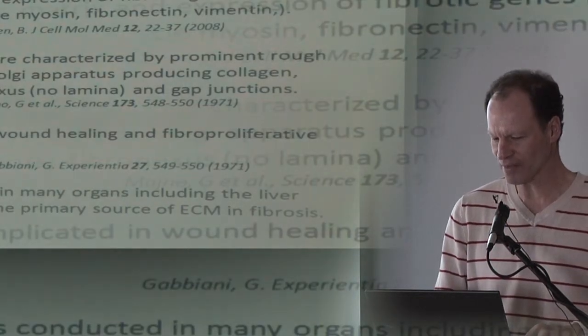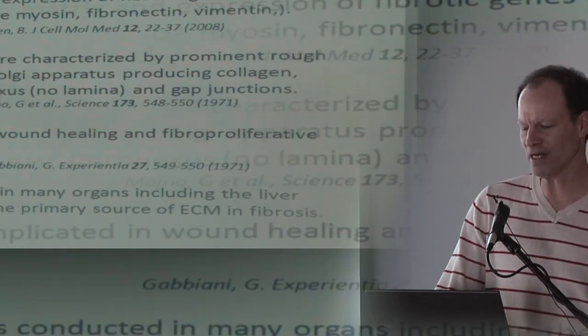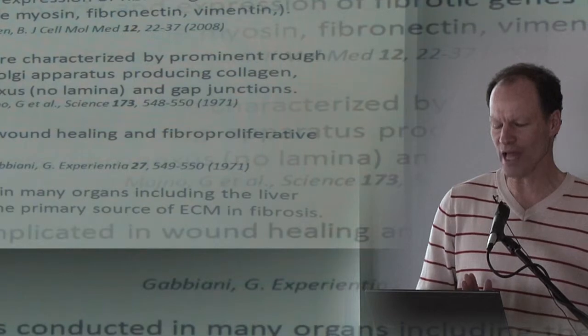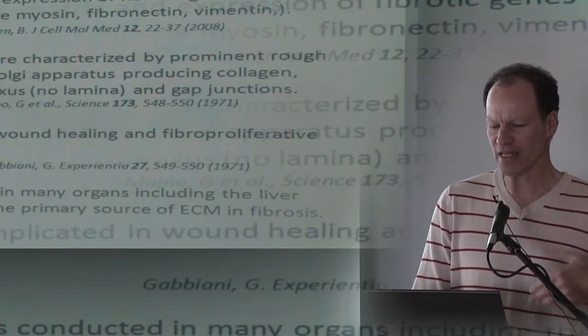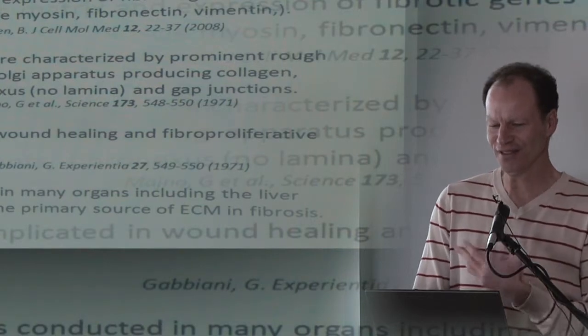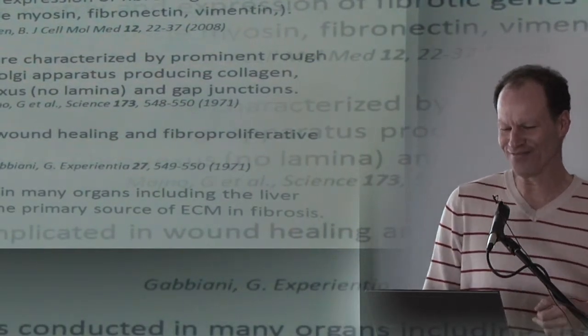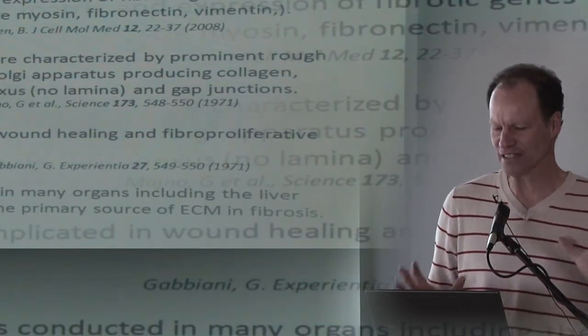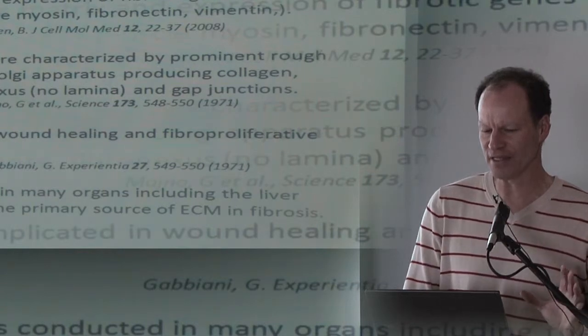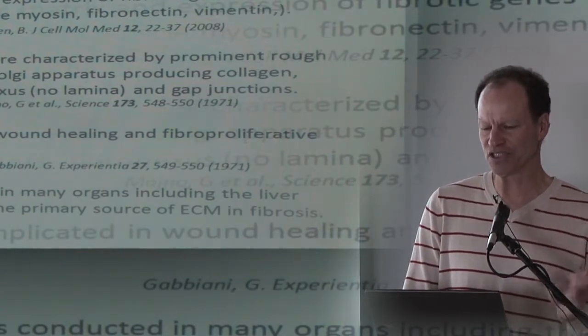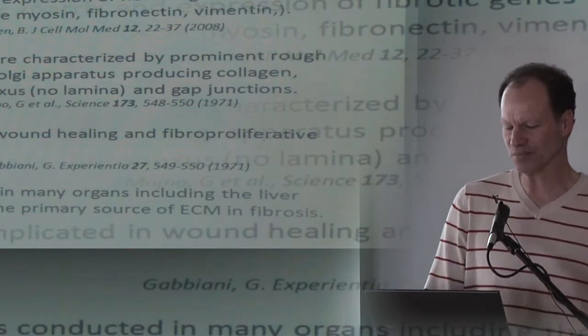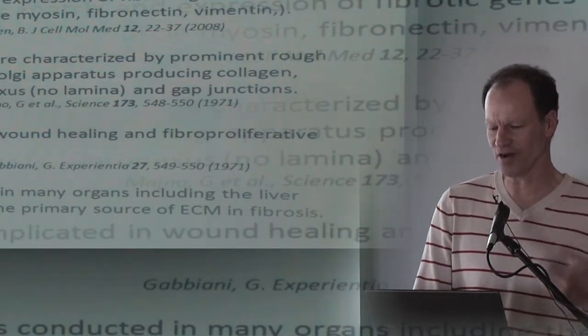So what are myofibroblasts? Myofibroblasts are a concept that was developed many years ago to describe both normal and pathological changes. It has a morphological definition, and this has been defined by morphologists as a characteristic cell expressing abundant pericellular matrix and specific genes including alpha smooth muscle actin, non-muscle myosin, fibronectin, and vimentin. We actually use these clinically. We use alpha smooth muscle actin to identify the myofibroblasts in the fibrotic liver.